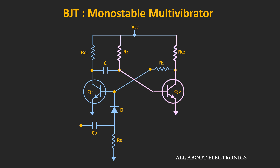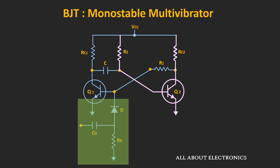Here, resistor R2 is the base resistor, while resistor Rc2 is the collector resistor. Both transistors are cross-coupled — the collector of the first transistor is connected to the base of the second transistor via capacitor C, while the collector of the second transistor is connected to the base of the first transistor via resistor R1. Through this portion of the circuit, the trigger signal is applied.